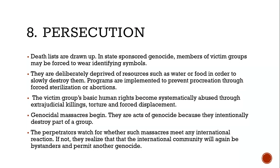Looking at genocides from the Armenian genocide in World War I to the Rohingya people in Myanmar today, why isn't the international community doing something? During World War II, Americans knew what the railways were being used for. There was even a plan for the U.S. Air Force to bomb railways to prevent Jewish people from being transported to killing camps, but the U.S. government called that off. Sometimes the international community just watches.